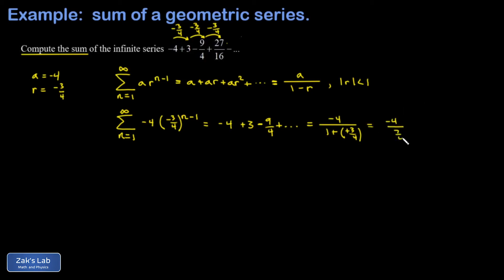In other words, 7 fourths in the denominator. Multiply by the reciprocal there, and I get negative 16 over 7.